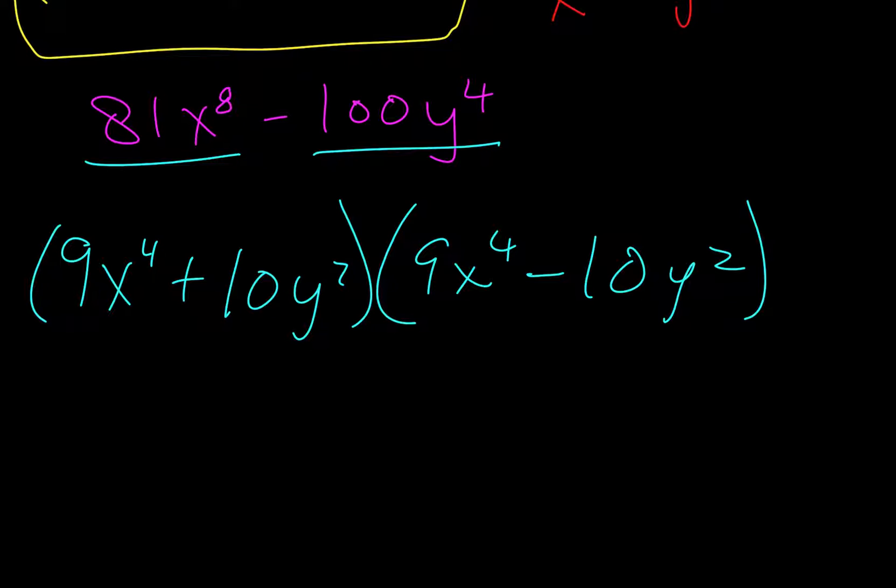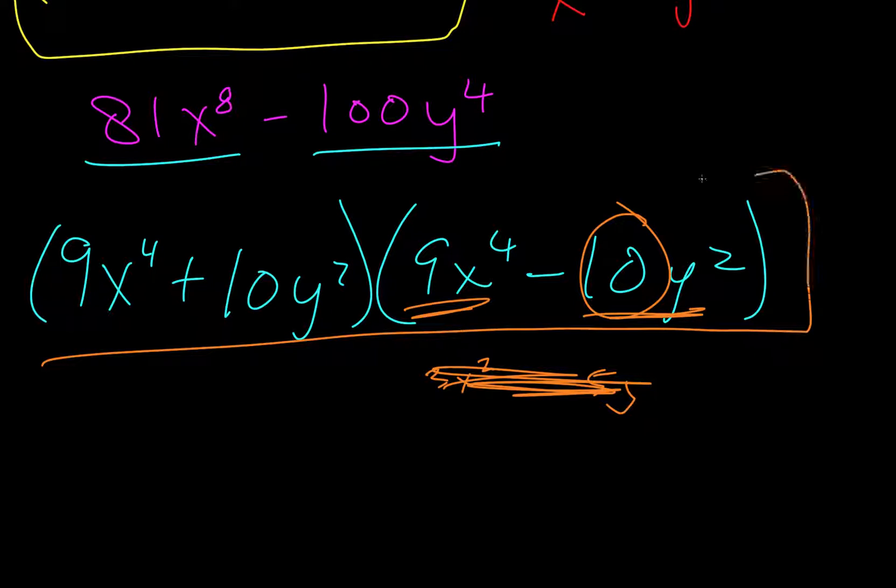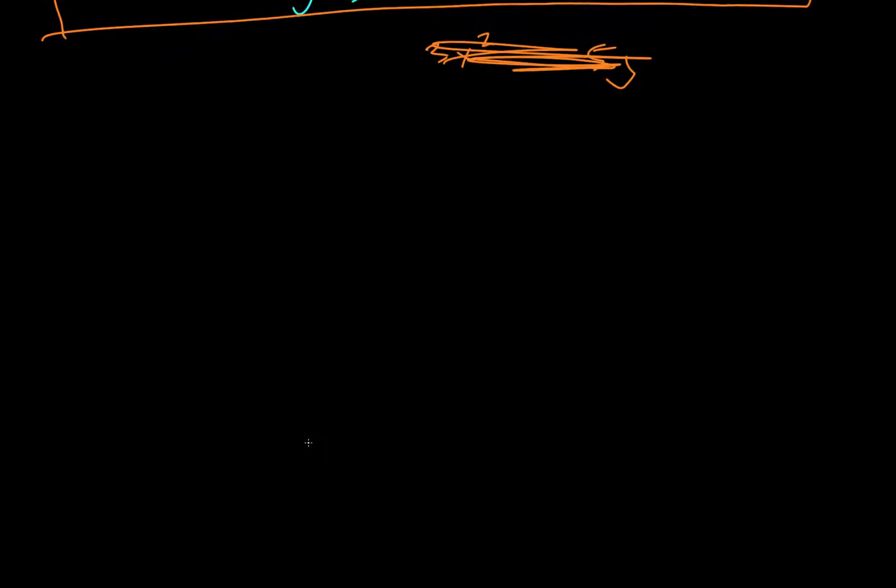Now we need to reevaluate what we have. So this looks like it could be our answer, but if we have anything that's squared, we want to go further. So we have 9x to the 4th, 10y squared. We can almost do it, but 10's not a perfect square, so we're not going to take it down. If, for example, 10 was a 25, then we would do 3x squared and then 5y, then we do a plus sign and a minus sign. But because we can't do that, because 10 is not a perfect square, we're going to say that we're finished.